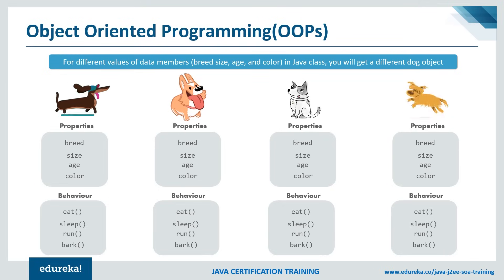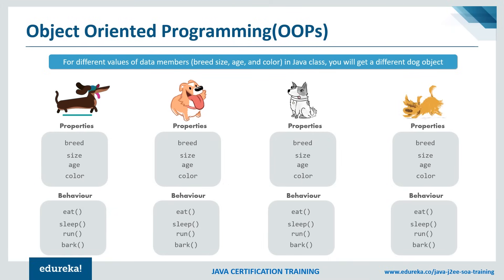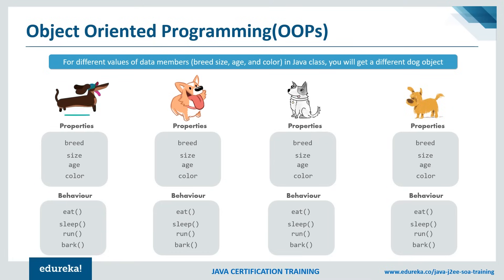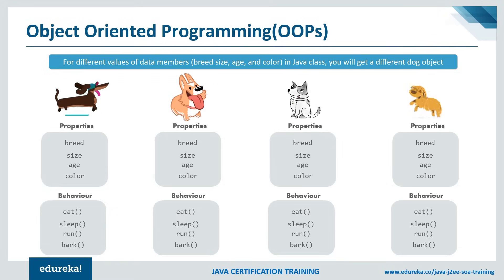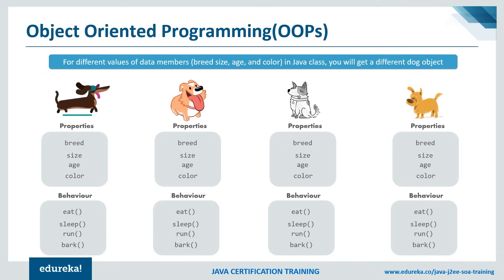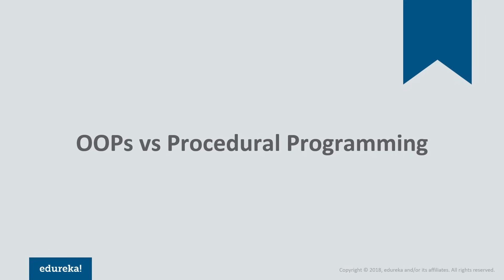The size, age, color, and breed for all the different dog objects will change. Similarly, for employees in a company — plumber, electrician, carpenter, HR, software engineer — they have the same details like employee ID, name, age, and code, but the data for these properties will be different. So different objects will have the same properties but with different values. An object is a container holding both properties and behavior.